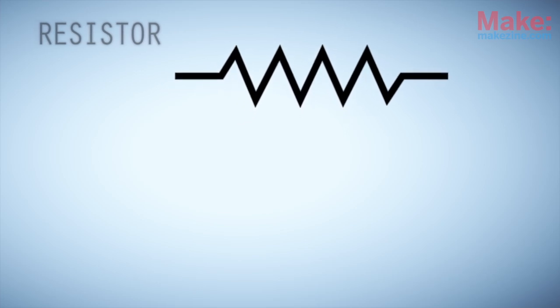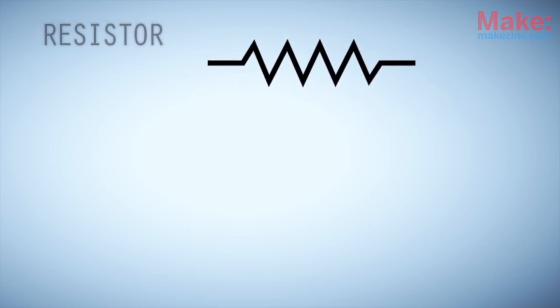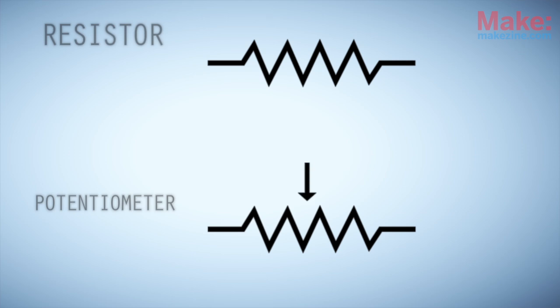Because a potentiometer is a variable resistor, it uses the same symbol with the addition of a third terminal to represent the pot's wiper.